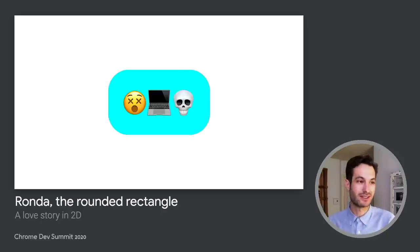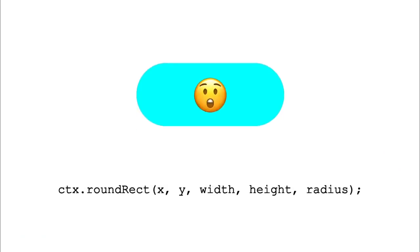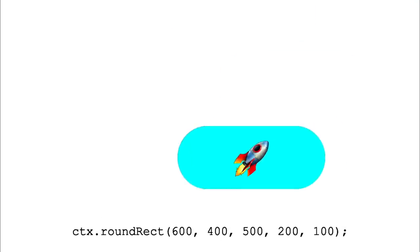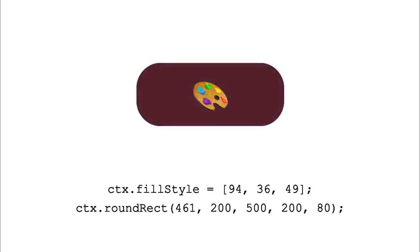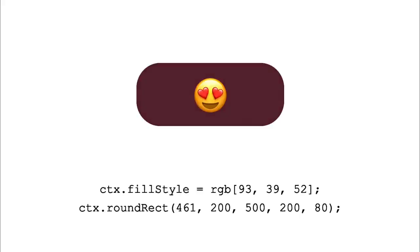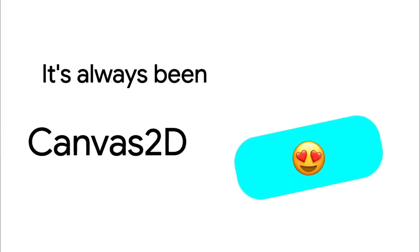Finally, one day Rhonda's good old friend Canvas 2D showed her what they'd been working on: a lightweight, round rect implementation. Now Rhonda could fly about the page — spinning, twirling, scaling, and changing looks with just a single line of code. Her new implementation was so beautiful, so simple, so lightweight, and fun. She nestled up to her new beau and said, 'It's always been you, Canvas 2D.'